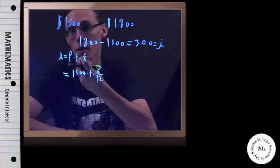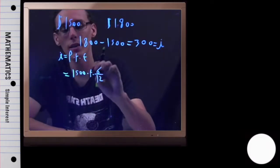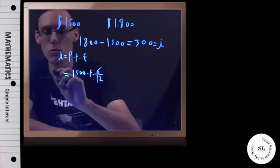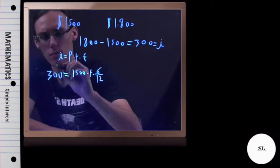Okay, cool. They didn't ask for the interest, they asked for the simple interest rate. So remember, the formula for interest is I equals principal times rate times time.